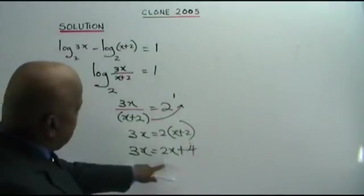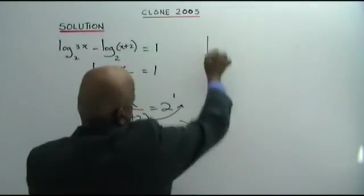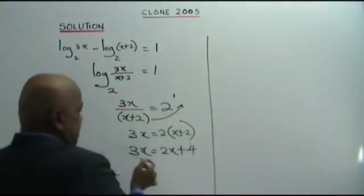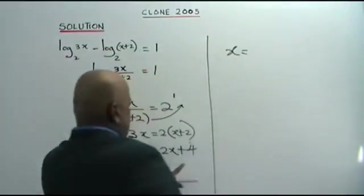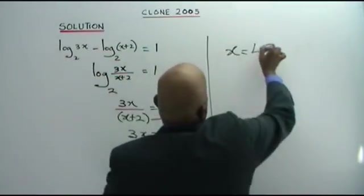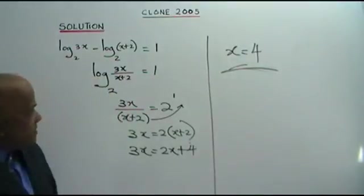Plus 2x, bring to this side. 3x minus 2x equals to x. And x equals to 4. This is your answer.